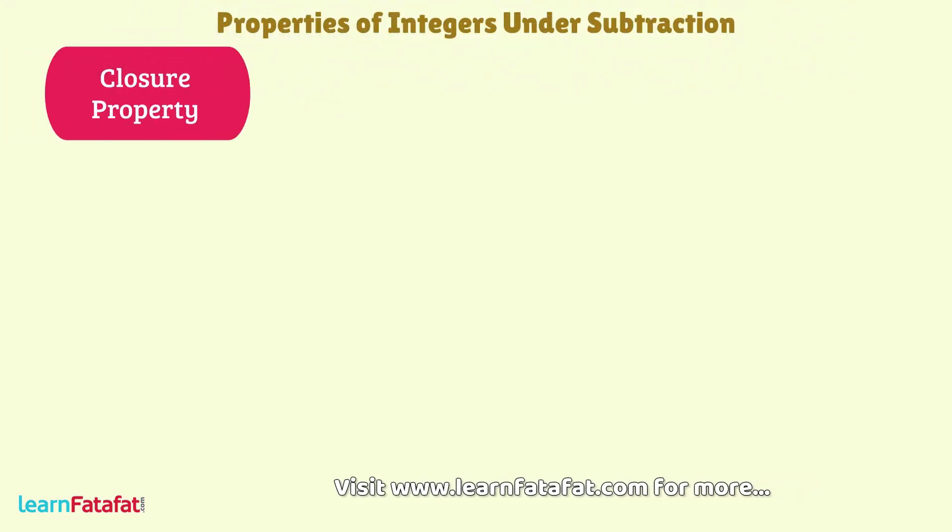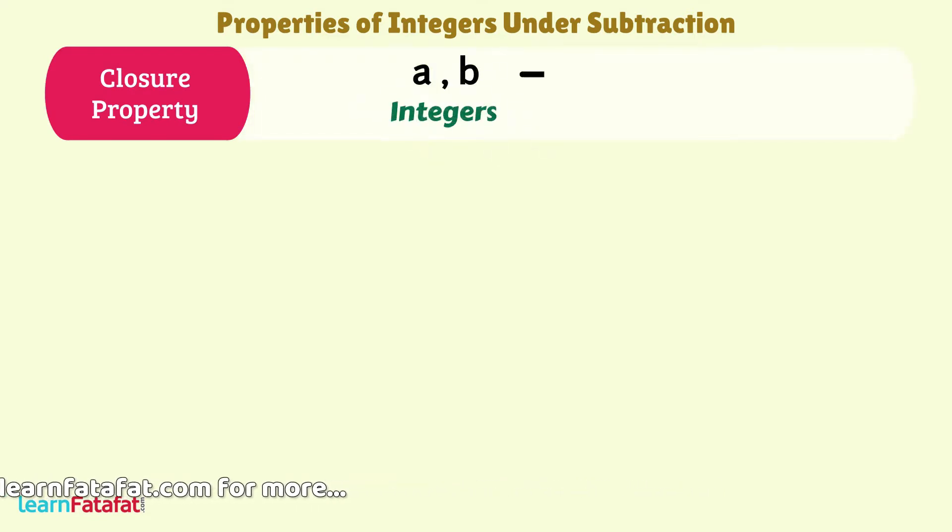Let's learn some of the properties of integers under subtraction. Closure Property: If a and b are two integers, then their difference a minus b is always an integer.